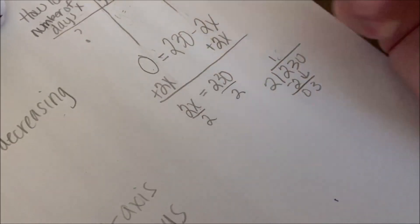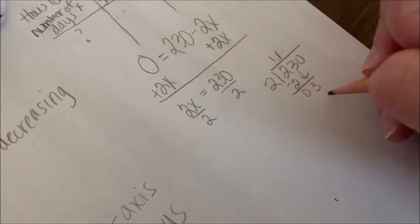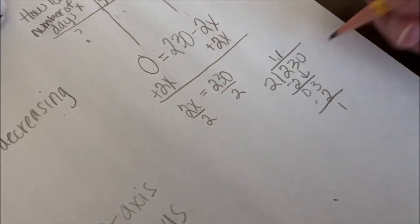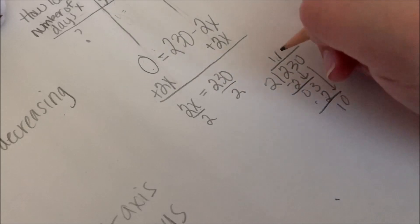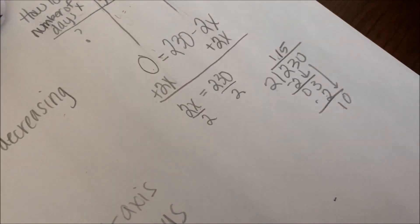It's okay to make a mistake and erase it. 3 minus 2 is 1. 10 divided by 2 is 5. 115.